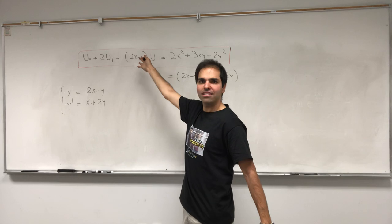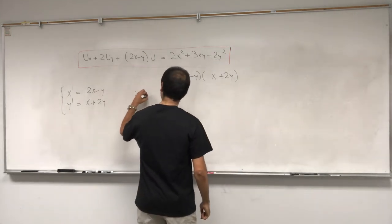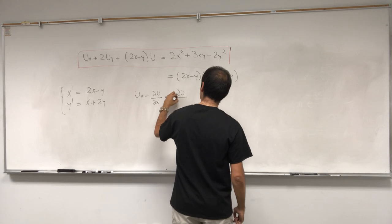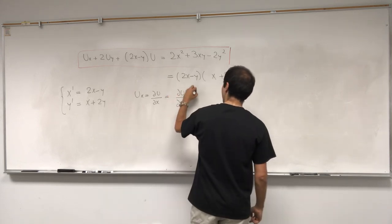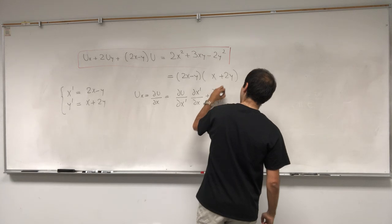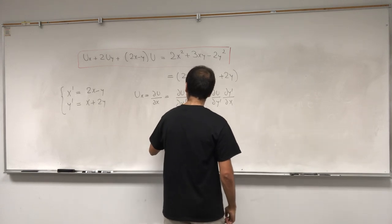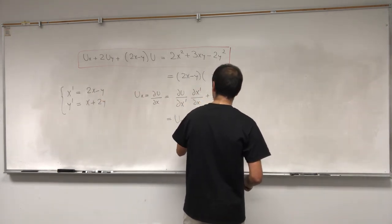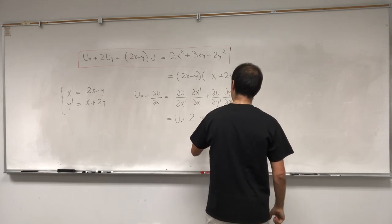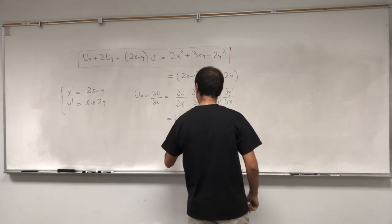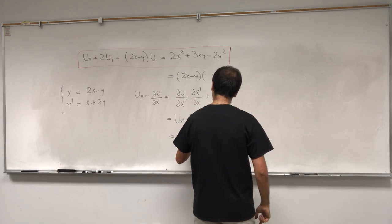So ux — that's partial u over partial x. Now just differentiate using the chain rule: partial u over partial x prime, times partial x prime over partial x, plus partial u over partial y prime, times partial y prime over partial x. That becomes ux prime. The derivative of x prime with respect to x is 2, and the derivative of y prime with respect to x is 1. So we get 2 ux prime plus uy prime.